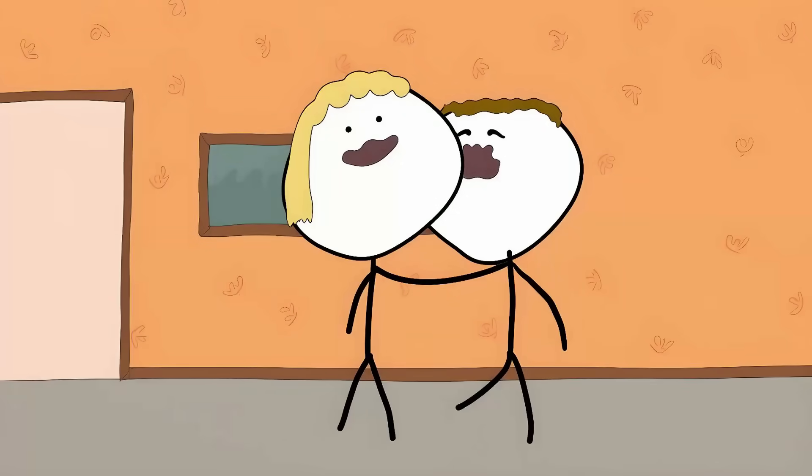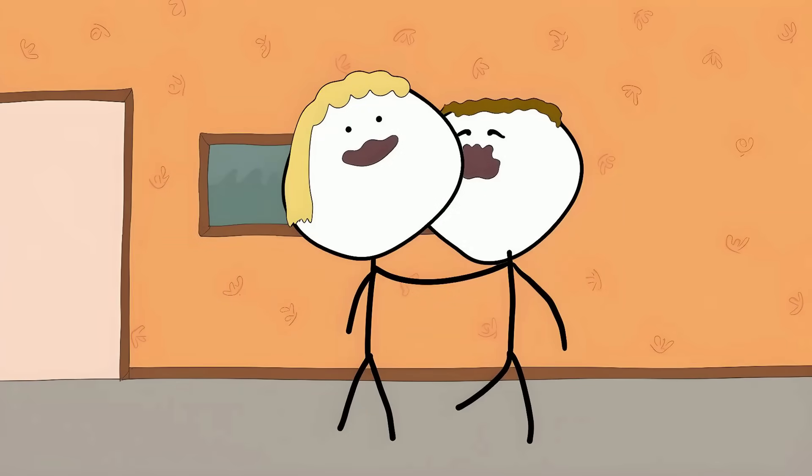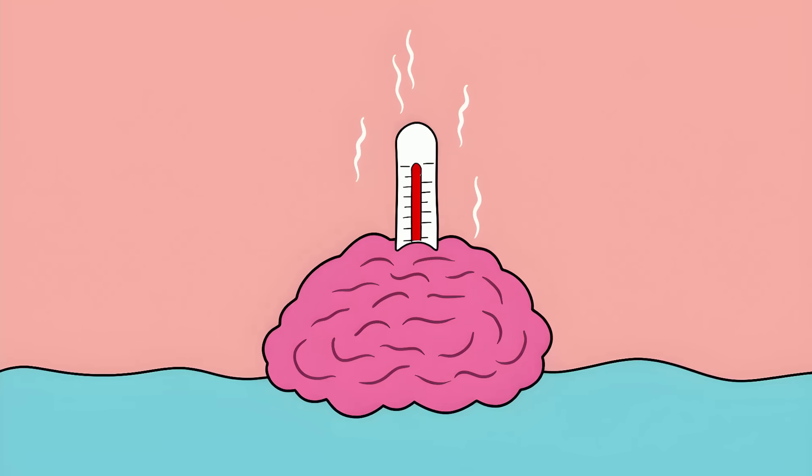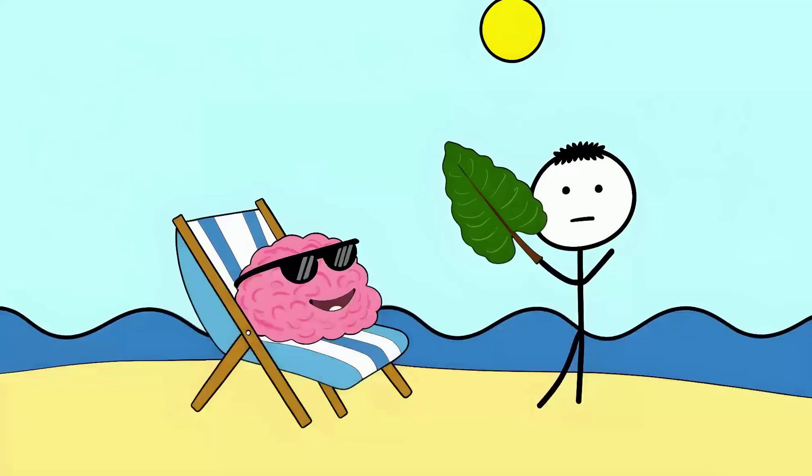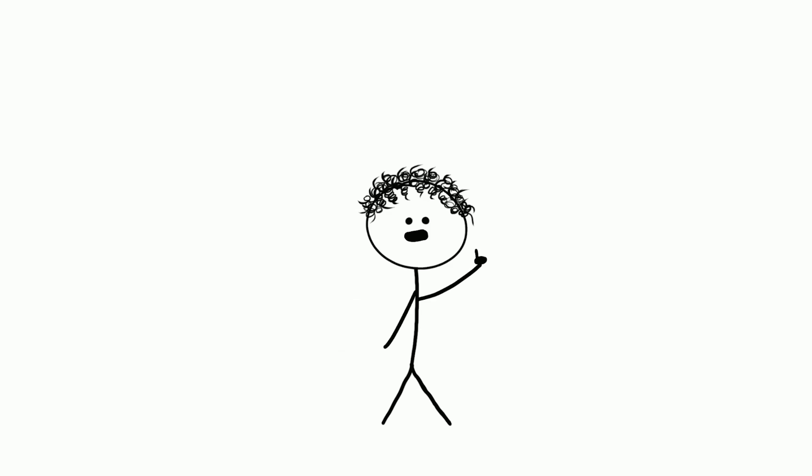You're more likely to catch a yawn from someone you know than a stranger. It's like your brain has a VIP list for whose yawns it copies. Some scientists think it's all about brain temperature. When you yawn, you're giving your brain an air conditioning break, but that doesn't explain why it's contagious.